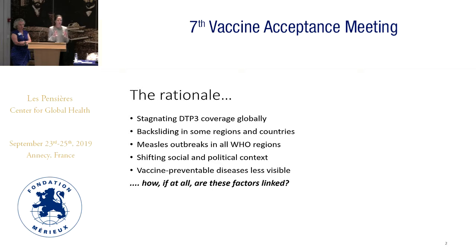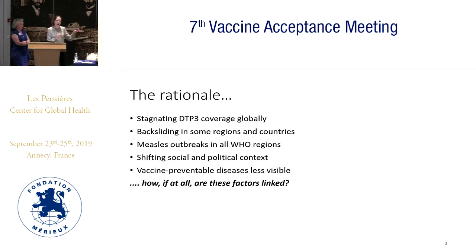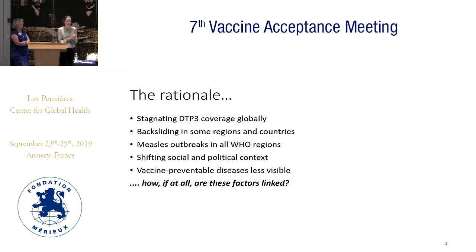Thinking about this at a global level, when we look at the trends in coverage of the third dose of DTP-containing vaccines, we have global coverage more or less stagnating over the last decade. We have a couple of regions — the Western Pacific and the Americas — that have declined in coverage of DTP3 vaccines in the last two years or so.